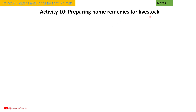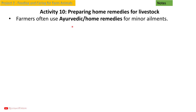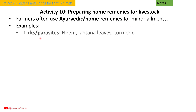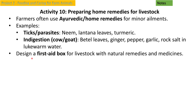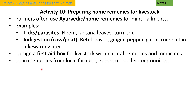Activity 10: Preparing home remedies for livestock. Farmers often use Ayurvedic home remedies for minor ailments. Examples: for ticks and parasites — neem or lantana leaves; for indigestion in cow or goat — turmeric, betel leaves, ginger, pepper, or garlic; rock salt in lukewarm water. Design a first aid box for livestock with natural remedies and medicines. Learn remedies from local farmers, elders, or herder communities.